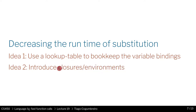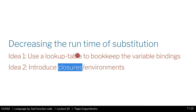We will also need to update our notion of closure — that is, the runtime value of a function. So these are the two things we need to do: introduce a lookup table called the environment where we bookkeep the variable bindings, and update what a function value is when it's evaluated dynamically.